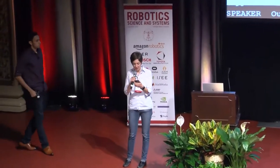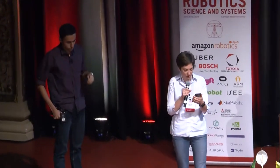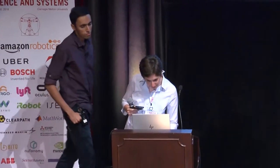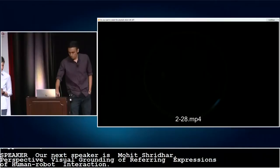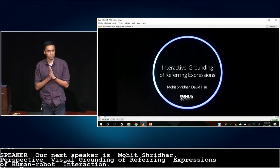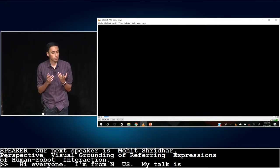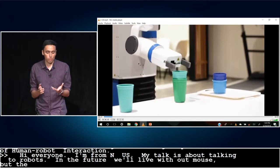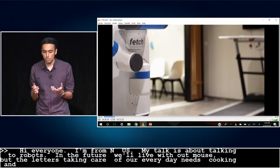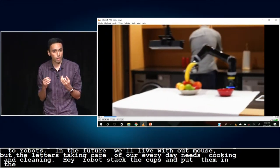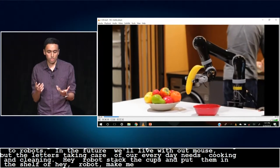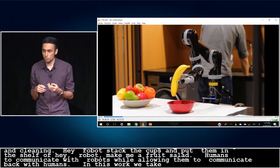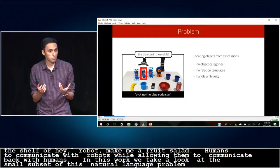Our next speaker is Mohit Sridhar, and he'll be presenting a talk titled Interactive Visual Grounding of Referring Expressions for Human-Robot Interaction. Hi, everyone. My name is Mohit, and I'm from NUS. My talk is about talking to robots. So in the future, we'll be living with autonomous butlers who will take care of our everyday needs, like cooking and cleaning. So imagine if you could say, Hey, robot, stack the cups and put them in the shelf. Or, Hey, robot, make me a fruit salad. Natural language provides a very powerful interface for humans to communicate with robots, while also allowing robots to communicate back with humans. In this work, we take a look at a small subset of this natural language problem, which is to do with grounding referring expressions or locating objects from visual descriptions.